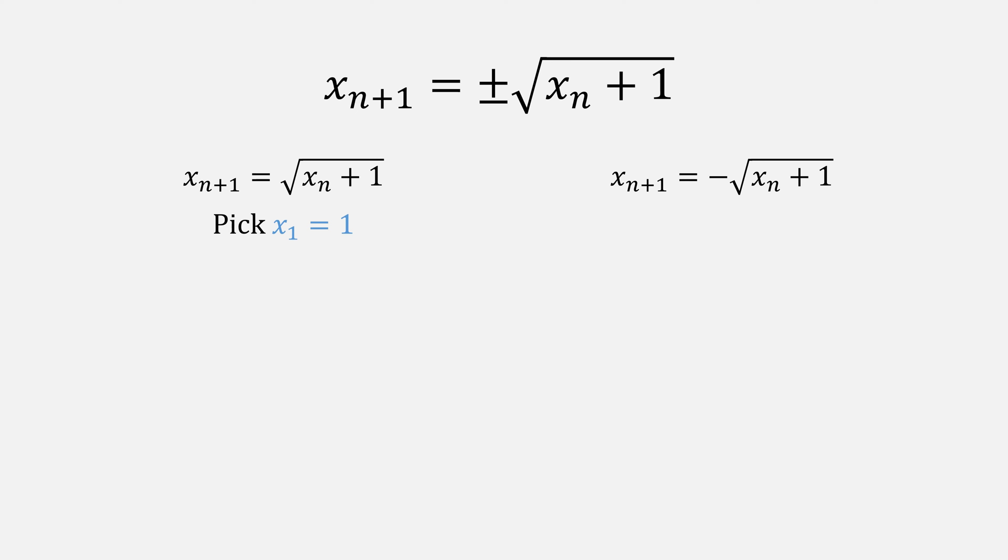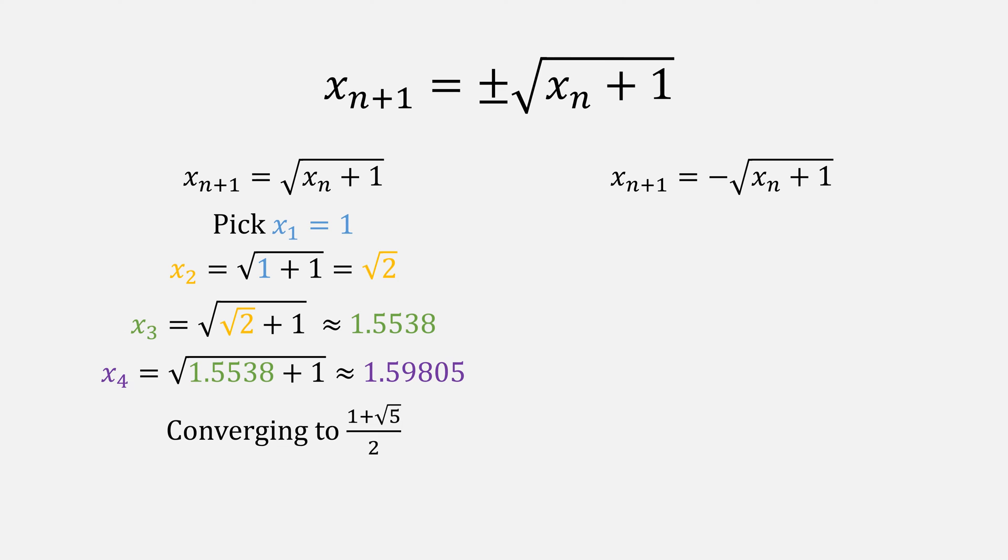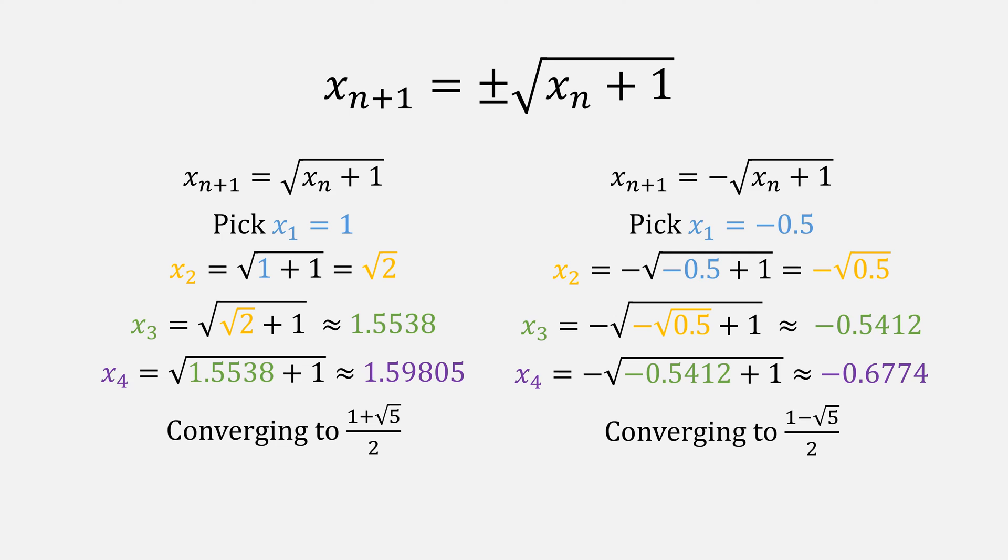For our function on the left, if we start at 1 and perform fixed point iteration, eventually we converge to the value 1 plus the square root of 5 over 2. For our function on the right, if we start at the point negative 0.5, this eventually converges to 1 minus the square root of 5 over 2.